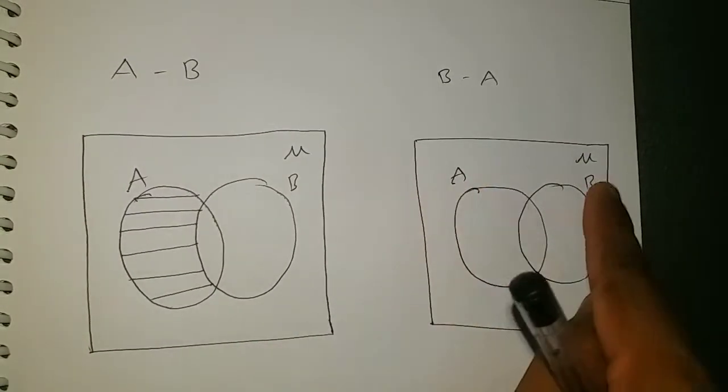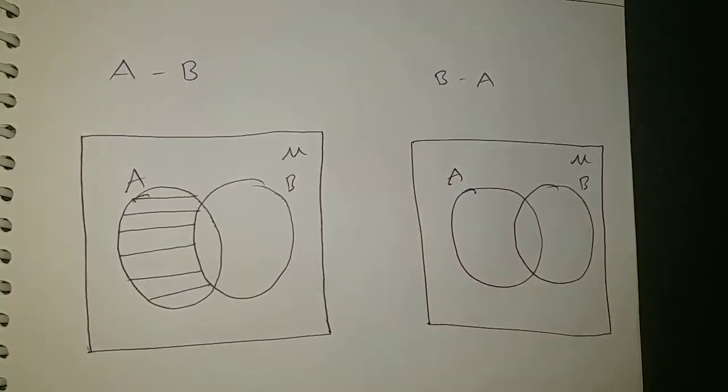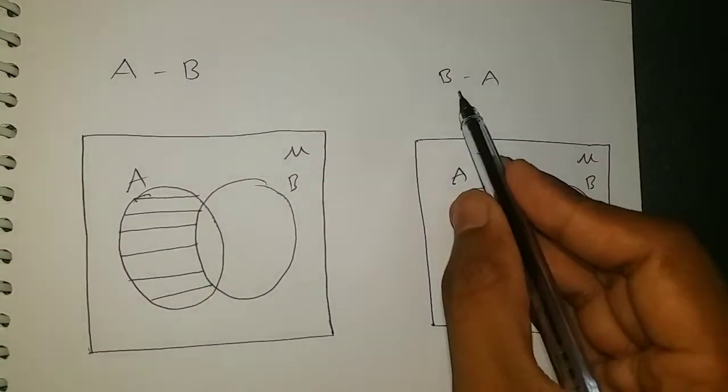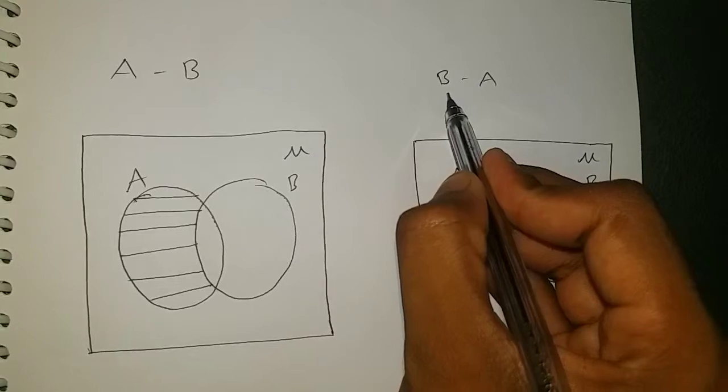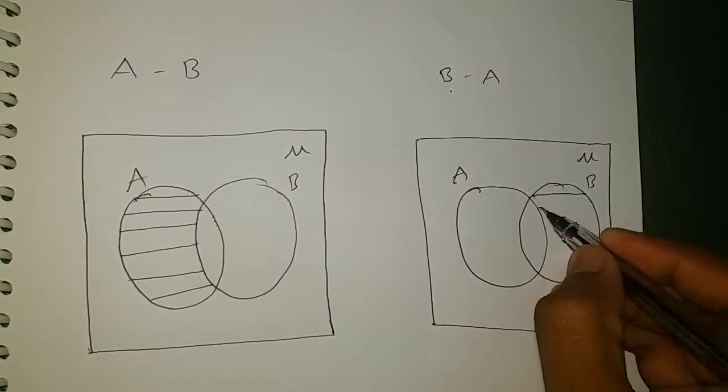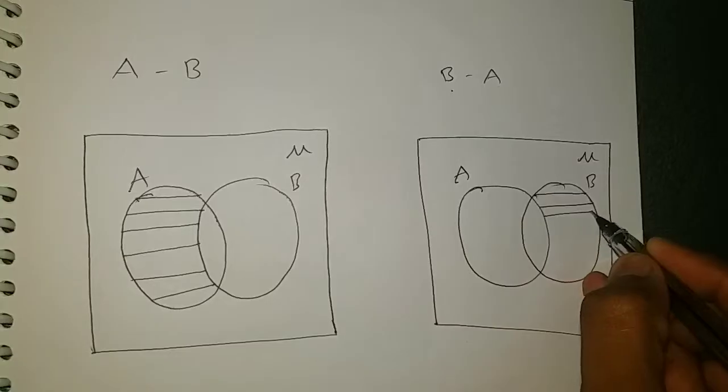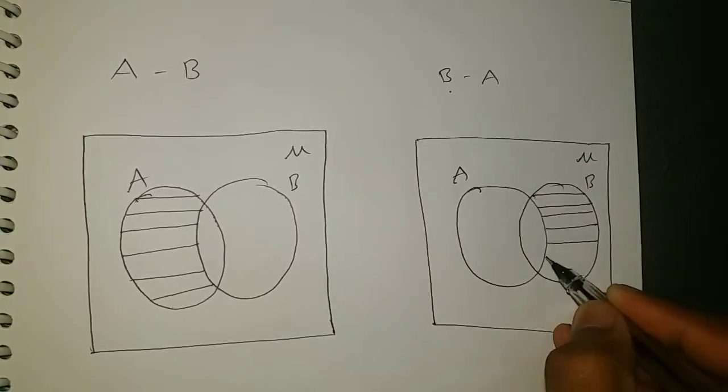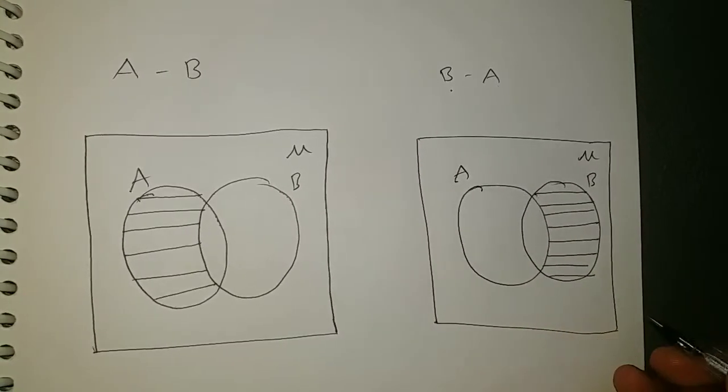Instead of taking here set A and set B, you can take set B, set A also no problem. Now here, B minus A. From B, I need to remove. From B, I am removing all the elements which are there in A. So this is the Venn diagram for B minus A.